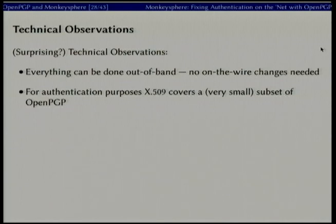As we progressed, there were a couple of technical observations. First, everything can be done out of band — we don't need to change any of these other protocols, which is a huge benefit. We don't have to modify every service to use something like this. For authentication purposes, X.509 is technically a subset of what OpenPGP can do. The X.509 hierarchical trust model is actually implementable in the OpenPGP web of trust — we would just decide to grant ultimate owner trust to those certificate authority organizations, as we could implement that in OpenPGP should we choose. Those of us using OpenPGP probably think that's a terrible idea — why have we accepted it in X.509 for so long?